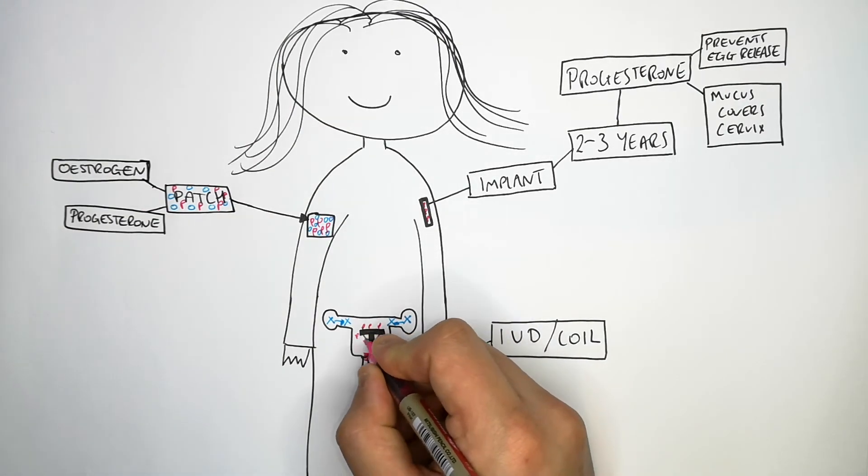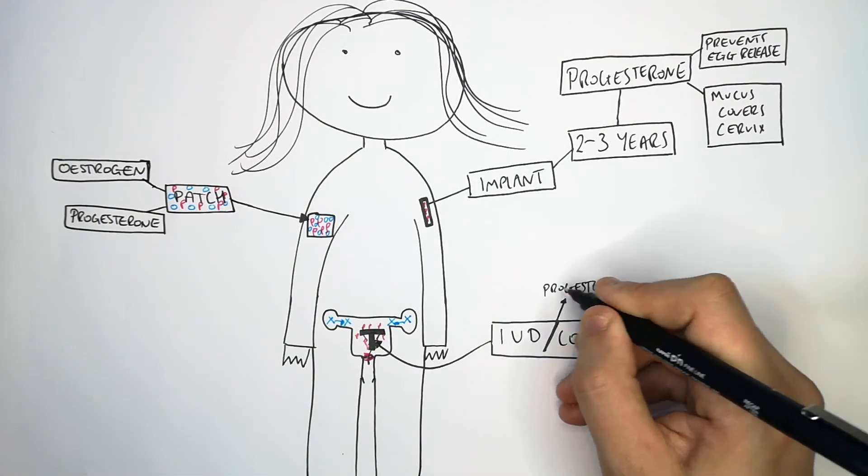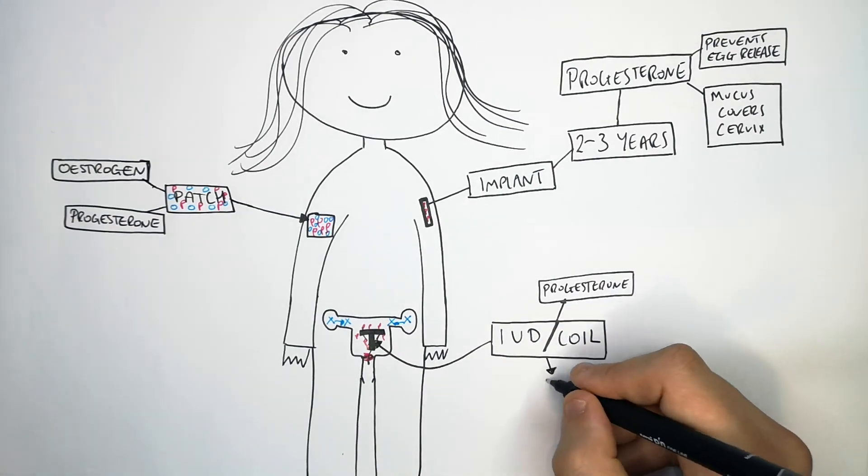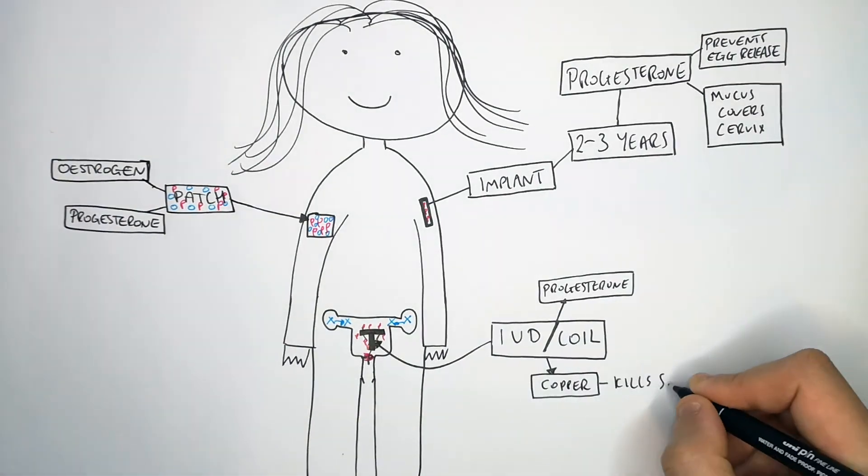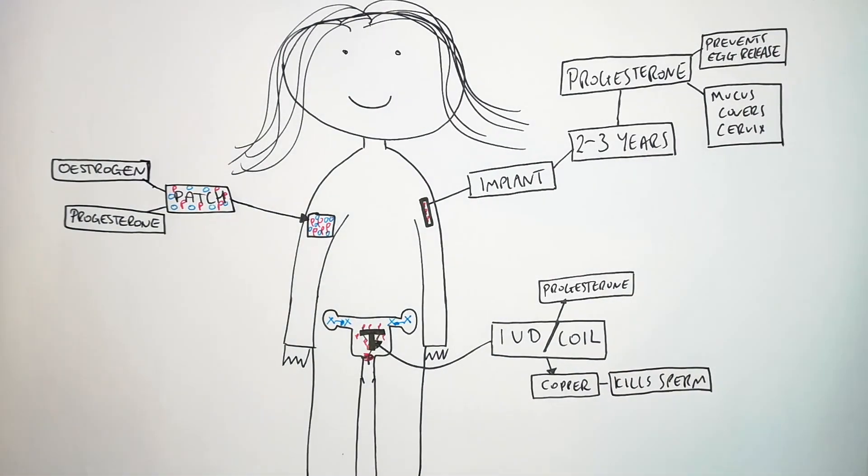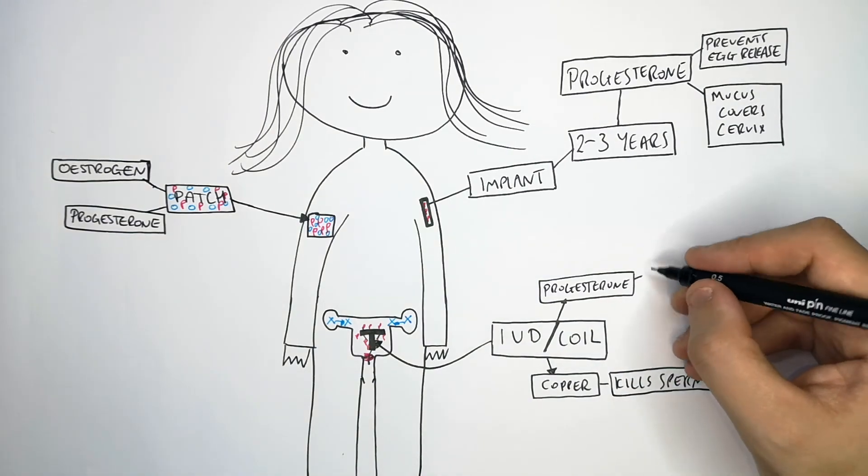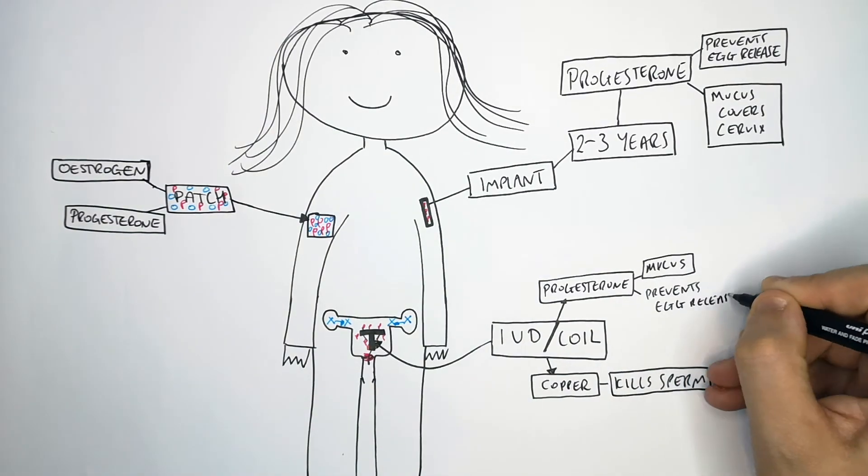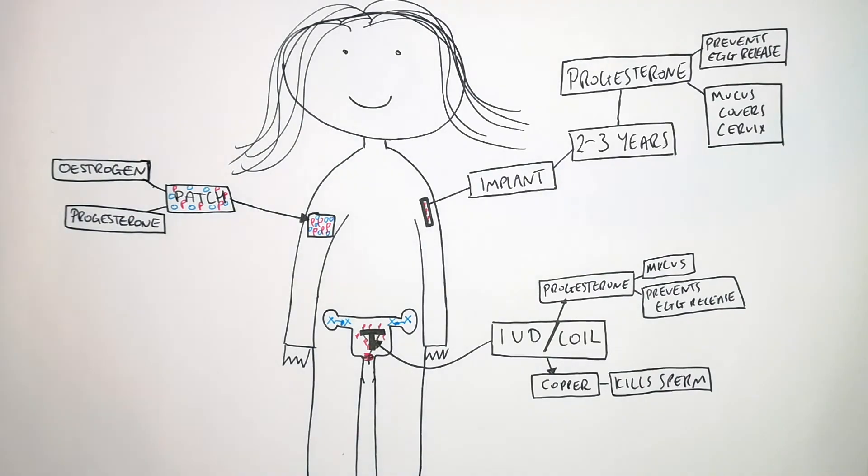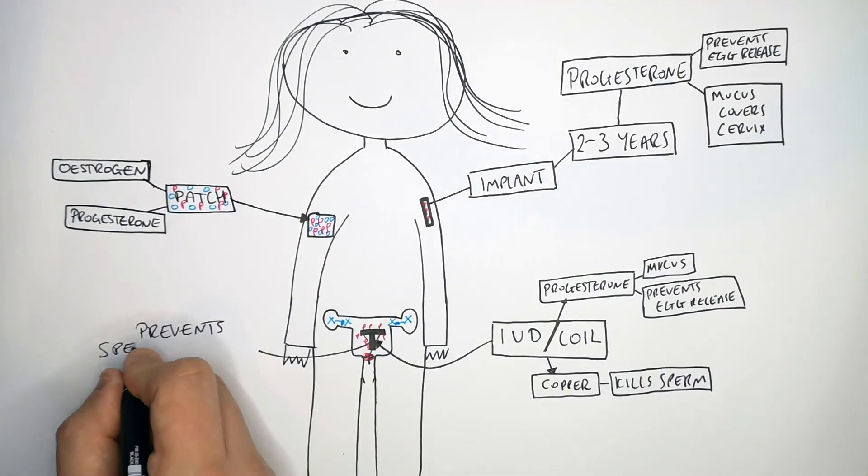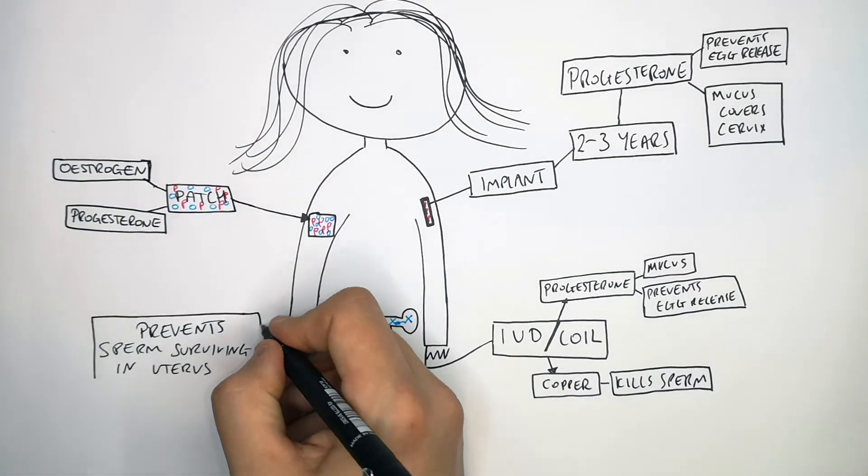One releases progesterone and the other is made of copper. The copper will kill the sperm and the progesterone acts to coat the cervix in mucus. But first and foremost, the IUD or coil prevents sperm from surviving inside the uterus.